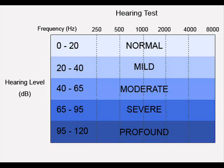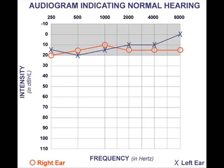With 0 to 20 dB as normal, the degree of hearing loss ranges from mild to profound in different individuals with hearing loss. An audiogram is a graphical representation of the hearing levels.